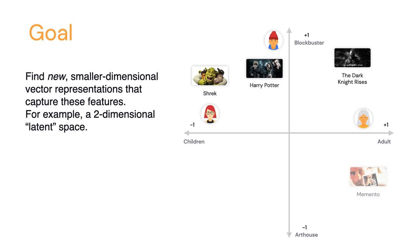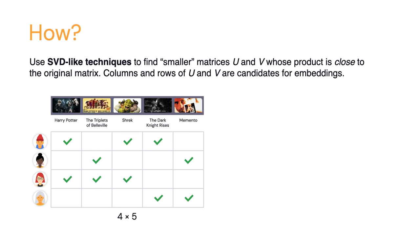The goal is to find a single vector space — let's say two-dimensional for simplicity — that can capture these features well. These features are sometimes called latent features, and this vector space is called a latent space — features that are hidden in your data that you'd like the mathematics to bring to light. Maybe one dimension picks up age brackets and the other dimension picks up whether movies are blockbuster or art house. You'd like representations of users and movies that, when plotted on this plane, correspond to the features observed in the data.